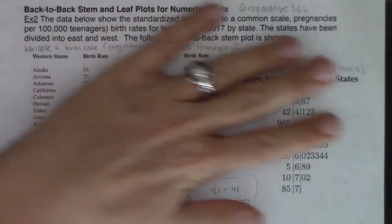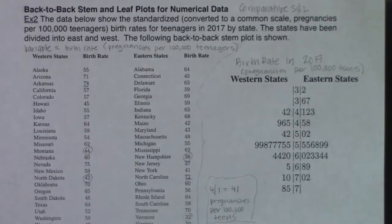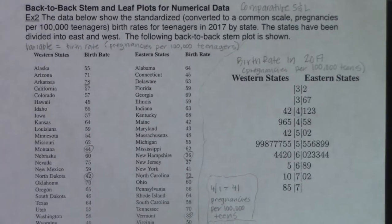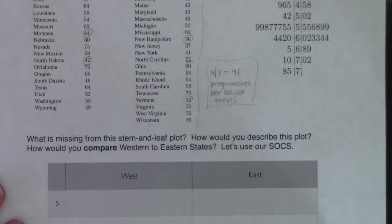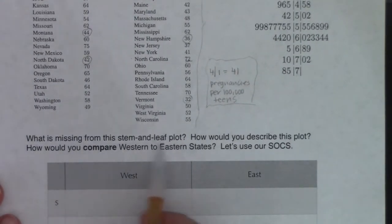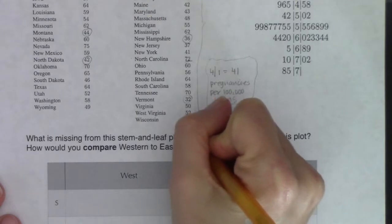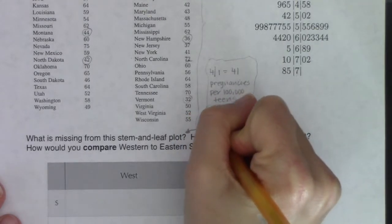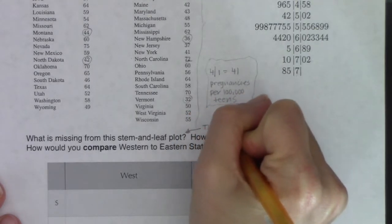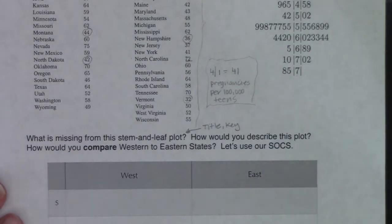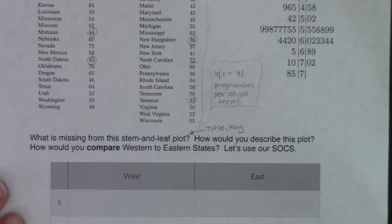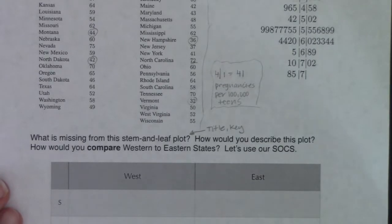That's your first look at a back-to-back stem and leaf plot. Let's start to answer the questions being asked of us. It says: what is missing from the stem and leaf plot? The title was missing and the key was missing. We fixed both of those things, but I always want to see a title and I always want to see a key.